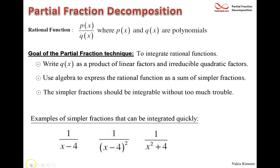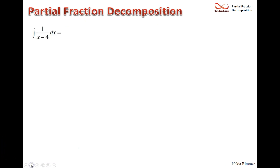To integrate 1/(x - 4): since it resembles 1/x shifted 4 units, use u = x - 4, so du = dx. The integral becomes ∫(1/u)du = ln|u|, giving ln|x - 4|.